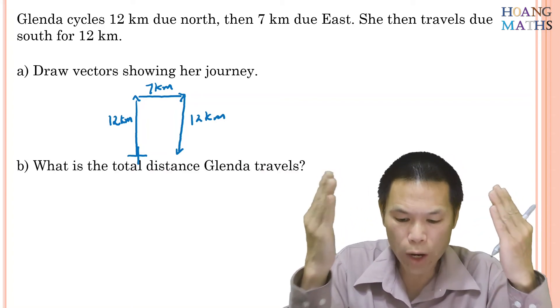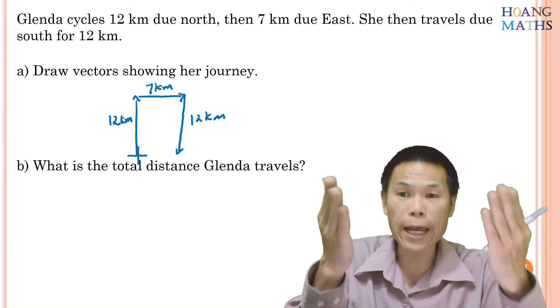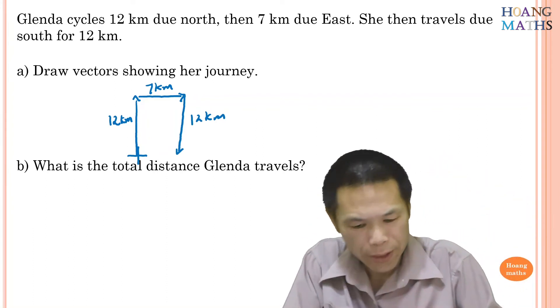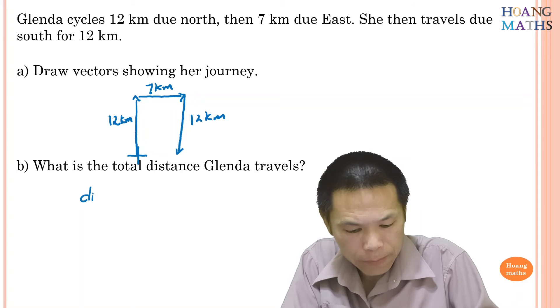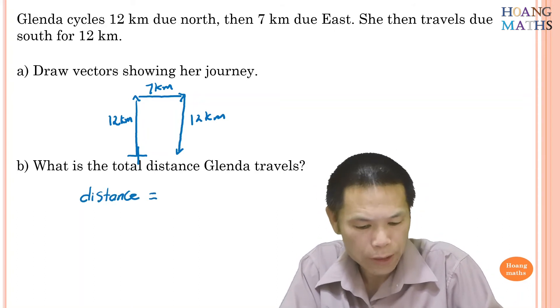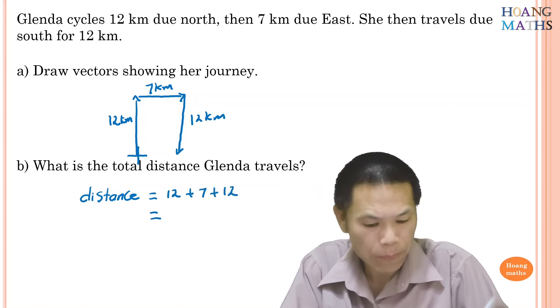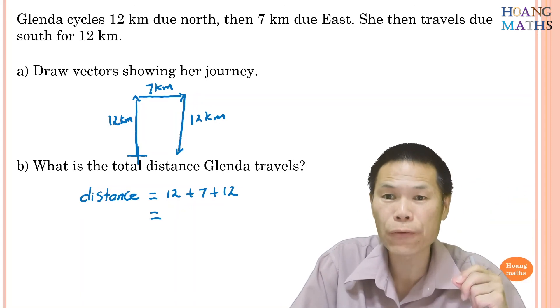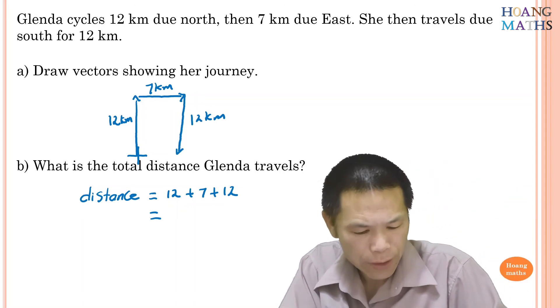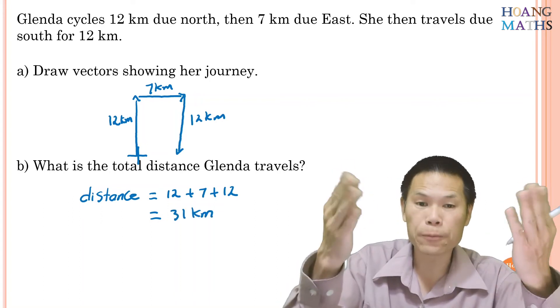Now part B: what is the total distance Glenda travels? So we just add all the distance together. So distance is equal to, we start with 12, we add 7, and we add 12. So 12 plus 12 is 24, we add another 7, so that will give me 31 kilometers. There you go.